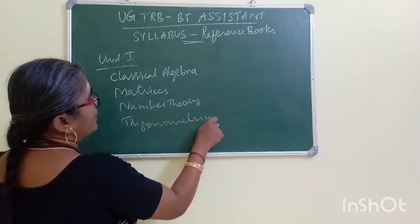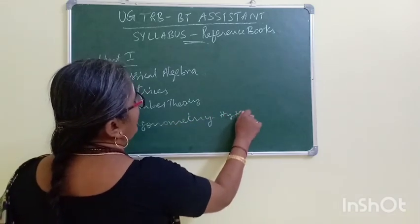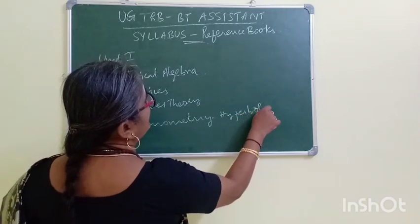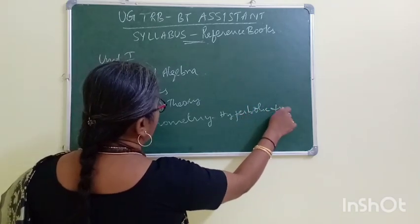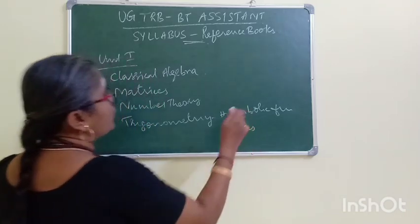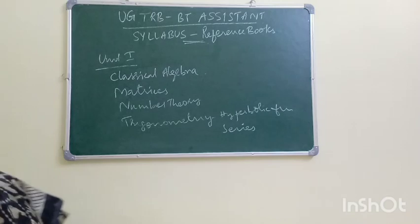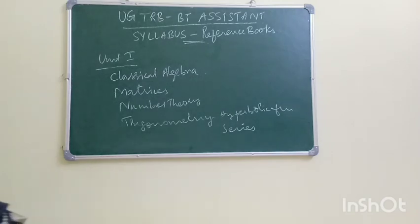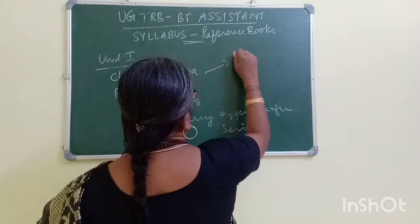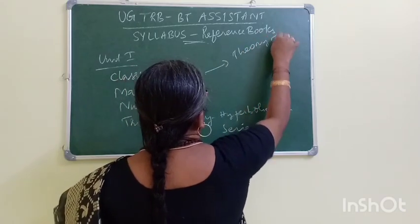Trigonometry — that is hyperbolic functions, hyperbolic functions, series — this is unit one. Unit one is a lengthier unit. This is theory of equations, theory of equations.